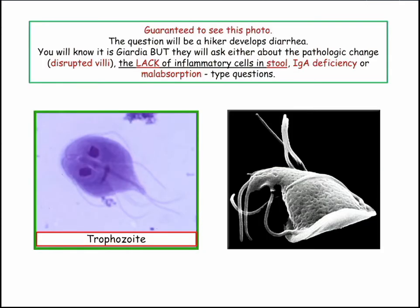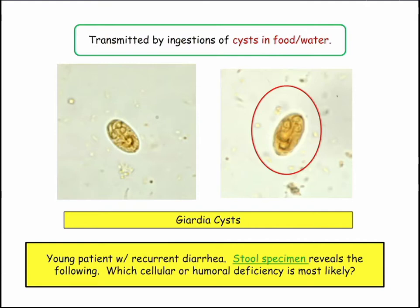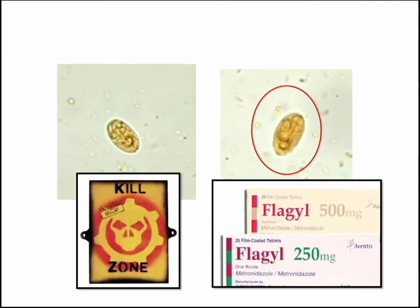You'll see the trophozoite photo, but they're now also showing cysts — that's what you consume from stagnant water. On biopsy: disrupted villi, lack of inflammatory cells in the stool. A young patient with recurrent diarrhea and a stool specimen showing cysts — what humoral deficiency allows this to perpetuate? IgA deficiency. How do you kill it? Metronidazole.